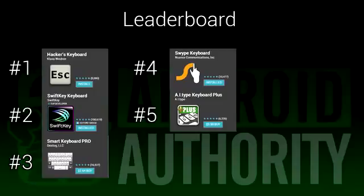Honorable mentions for these include Go Keyboard, Touch Pal, Slide It, Thumb Keyboard, and the Vanilla Keyboards from Android 2.3 and 4.2. All of these are available in the Google Play Store. The only reason why we didn't include OEM keyboards like Sense or TouchWiz is because they aren't available to everyone.